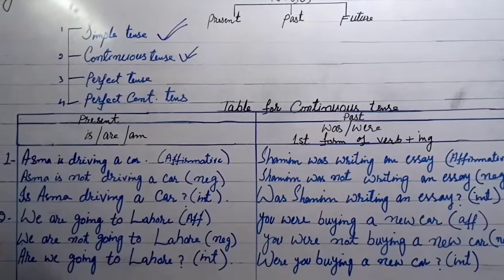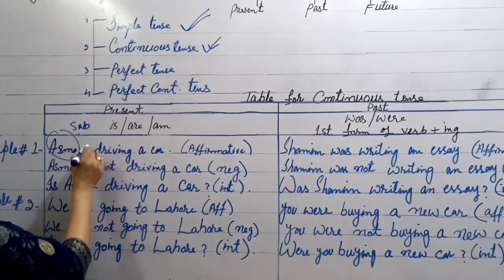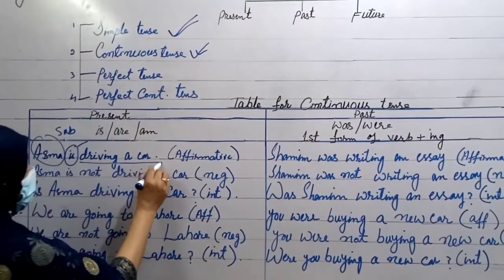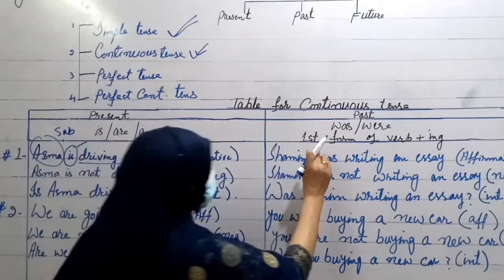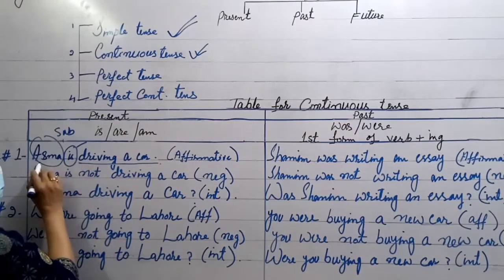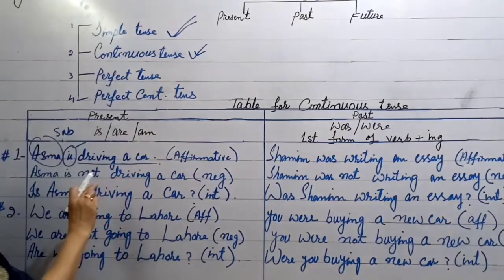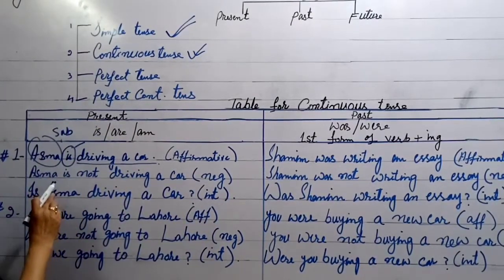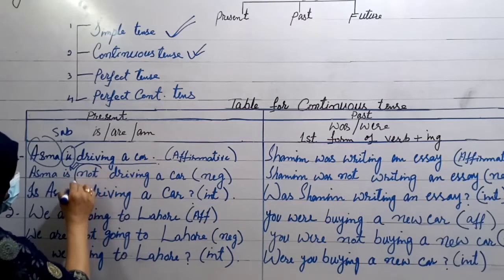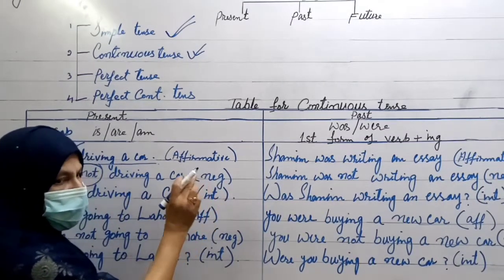Look at example number 1. 'Asma' is the subject, 'is' is the auxiliary verb or helping verb. You will use the first form of the verb with I-N-G — drive becomes 'driving'. Asma is driving a car. This is the affirmative sentence. To make it negative, just after the auxiliary verb, you add 'not': Asma is not driving a car. This is the negative sentence.